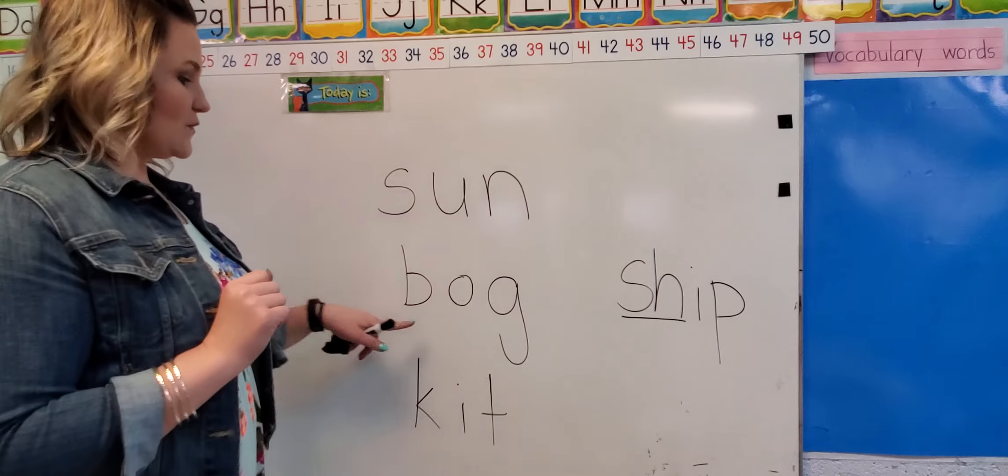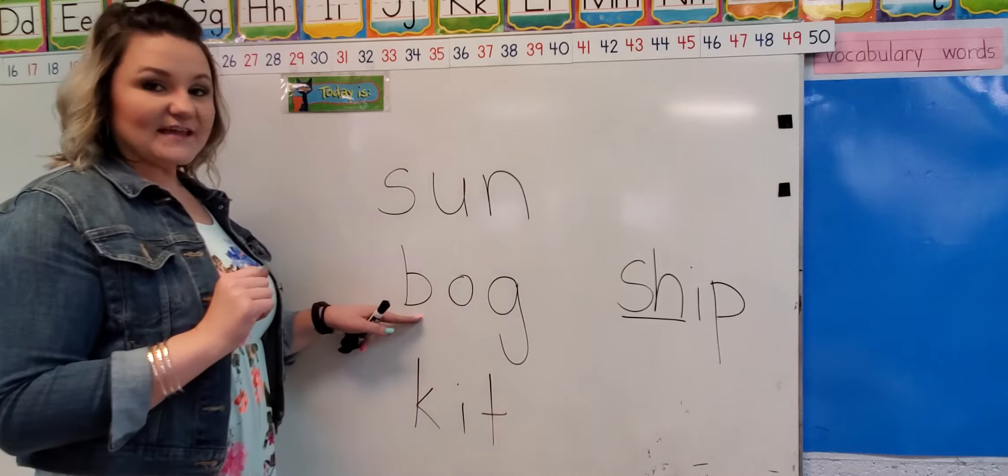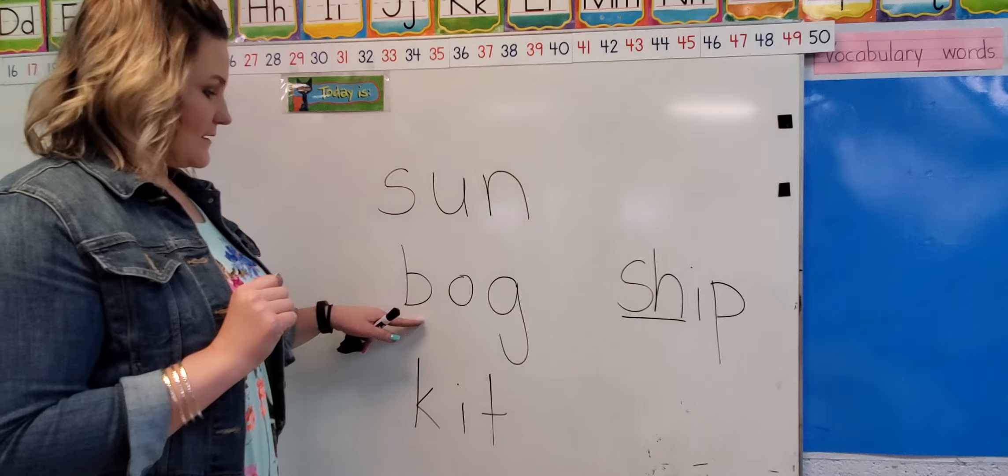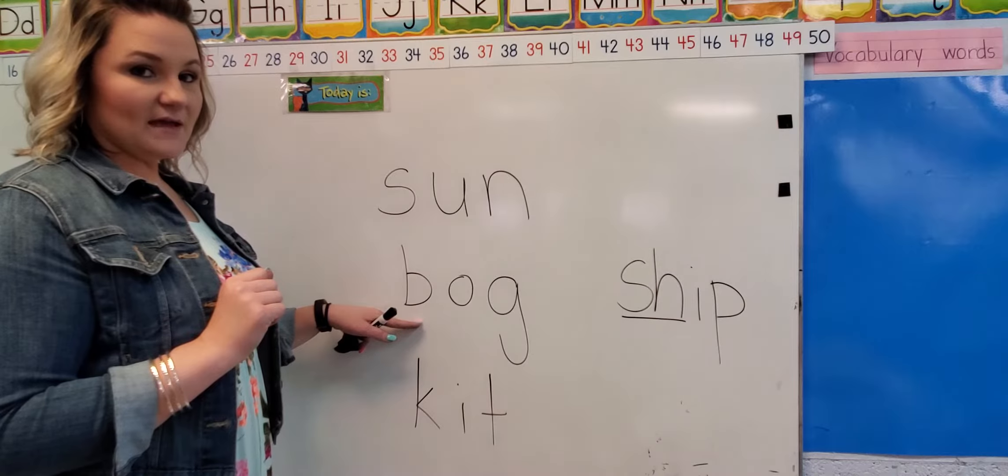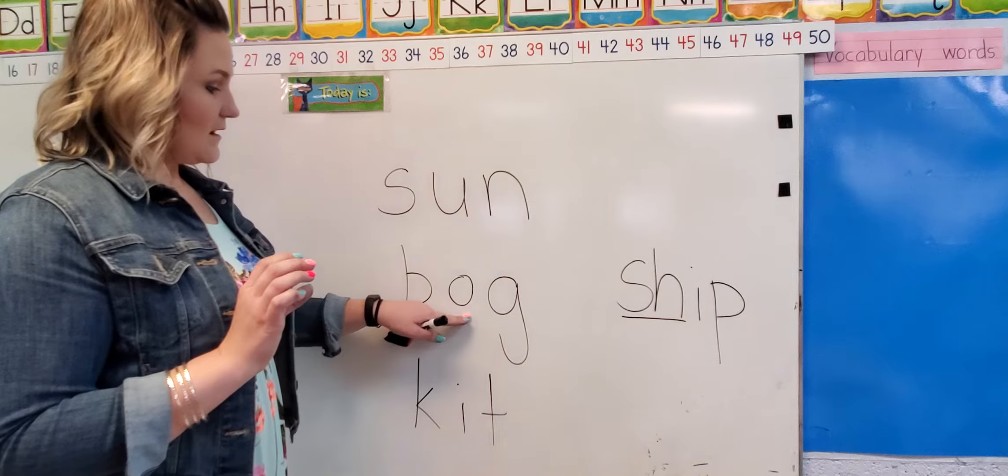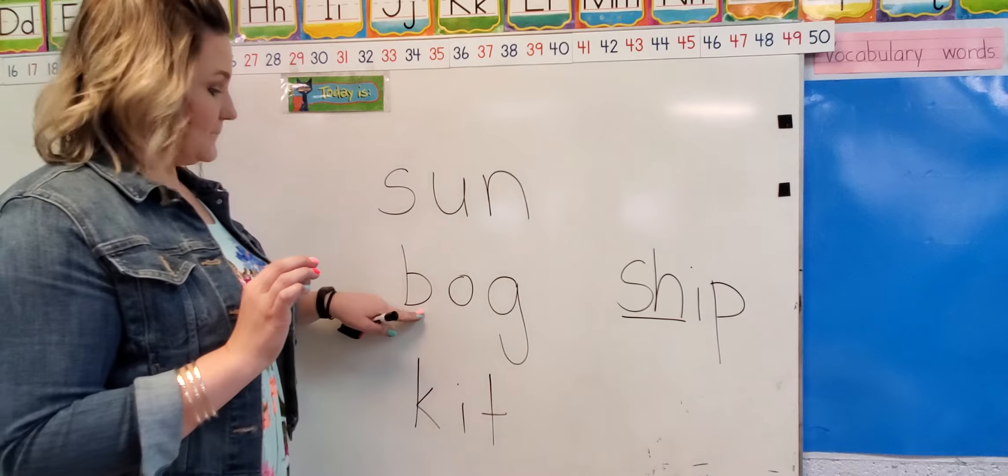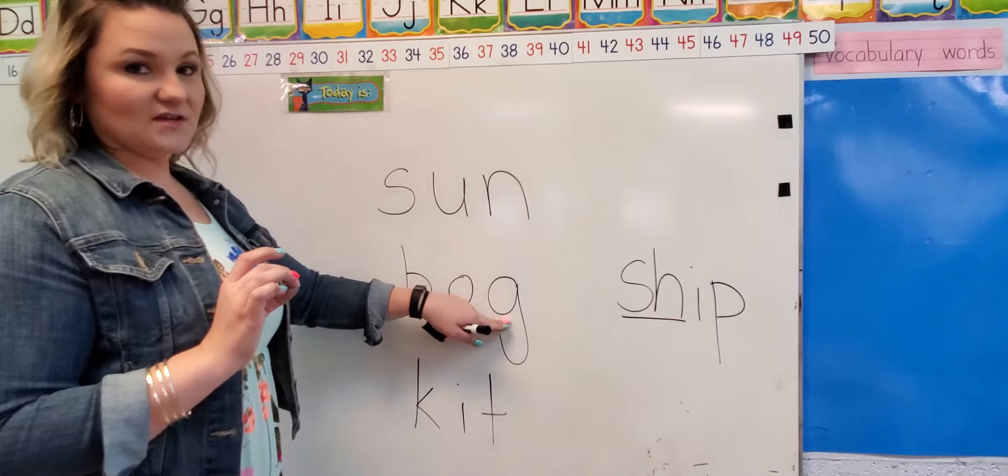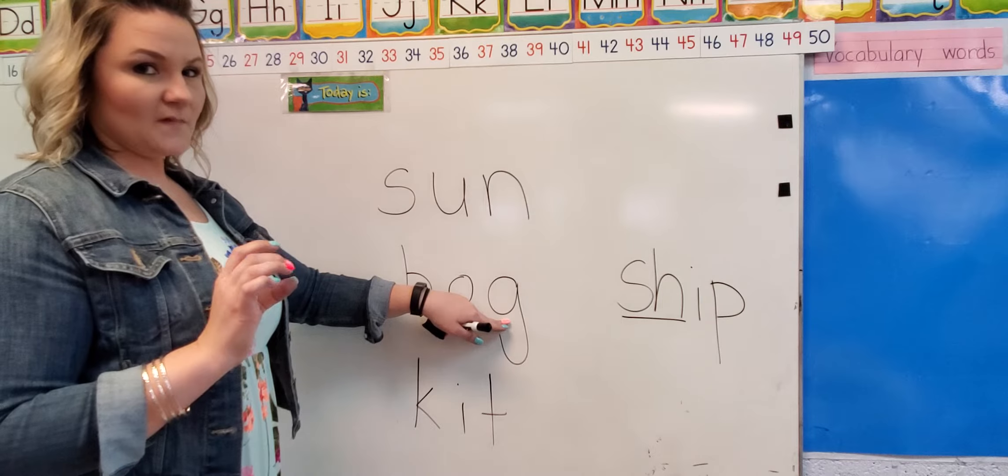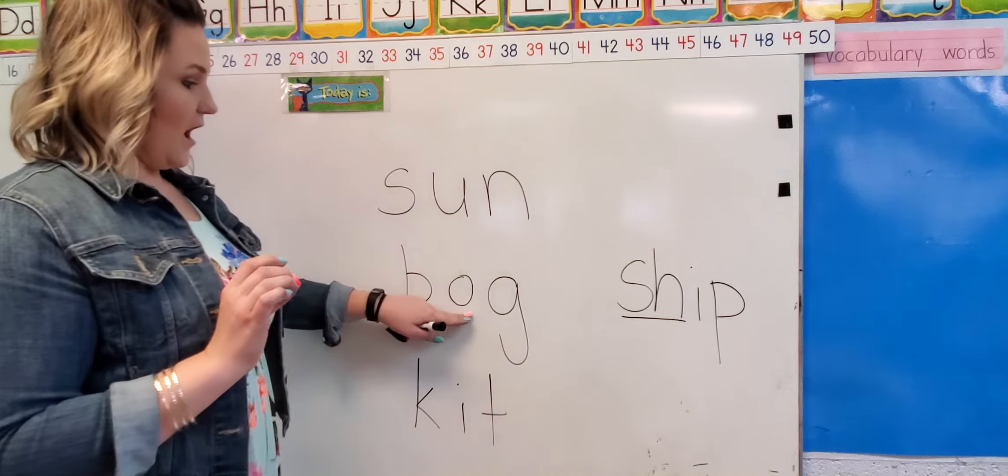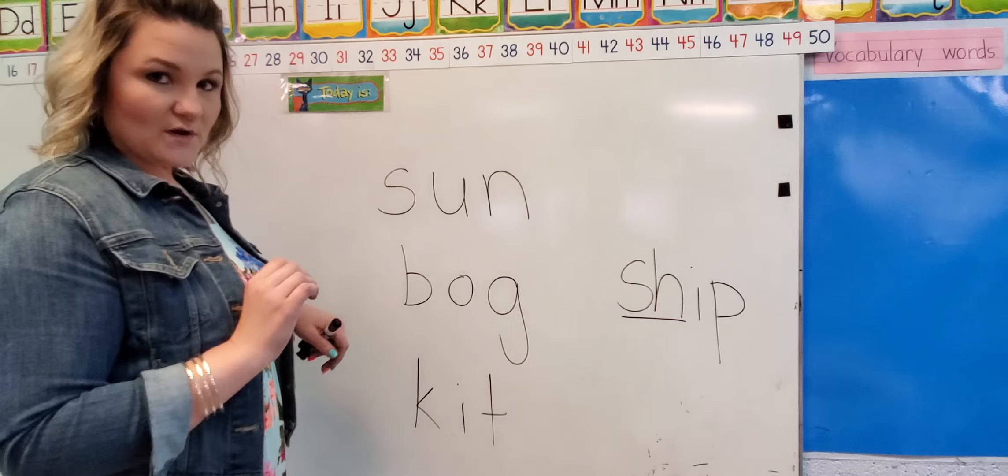Now we're going to blend this word together. We're going to do the sounds we hear first. Ready? It's a B. What sound does a B make? B, O, B, A, and a G. What sound does G make? G. B, A, G. Bog.